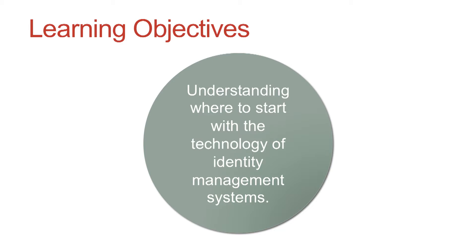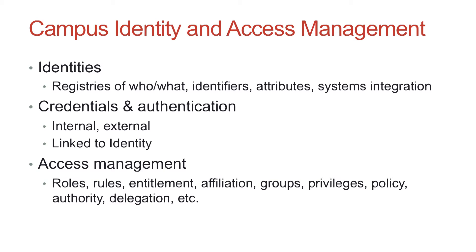There are many names for it: an identity management system, an identity and access management system, identity services, and so on. Regardless of what term or acronym you use, there are three core aspects to the system. First, there is the registry of information that contains the identifiers to uniquely label a person or thing. Secondly, the attributes to describe that person or thing, and finally the protocols and policies that allow the system to integrate with others.